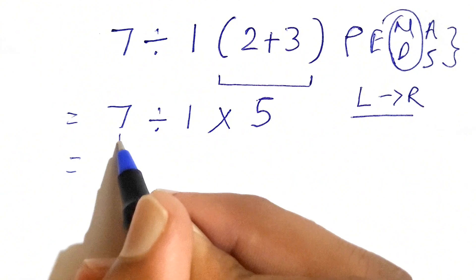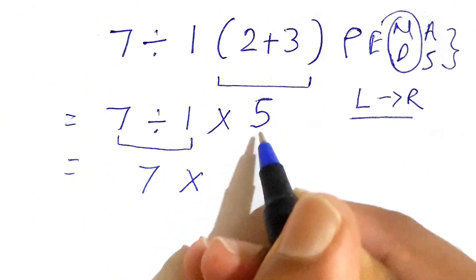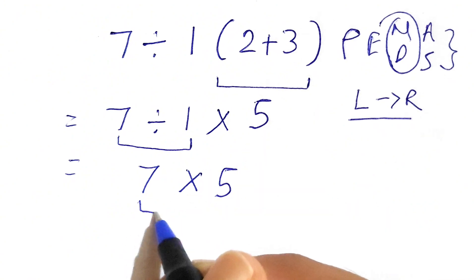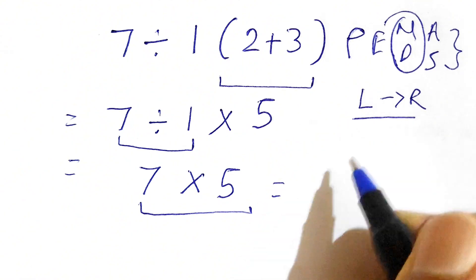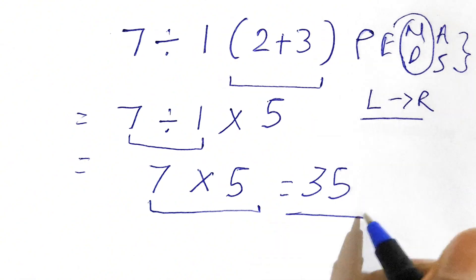We have 7 divided by 1, which gives us 7. Now we are only left with 7 times 5, and 7 times 5 gives us the answer as 35. So this is the final correct answer.